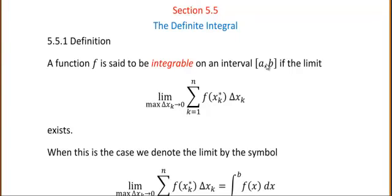So a function f is said to be integrable on an interval from a to b if the limit, now notice this limit, the limit is the maximum of the delta x sub k's go to 0. So the fattest of these delta x sub k's, the fattest of the rectangles, the widest of the rectangles, goes to get skinny.